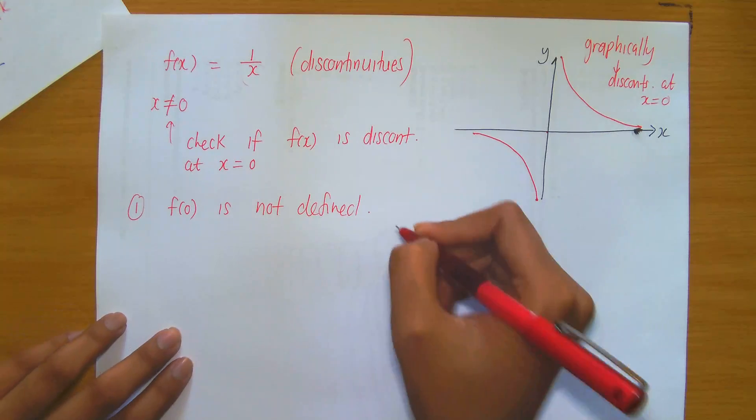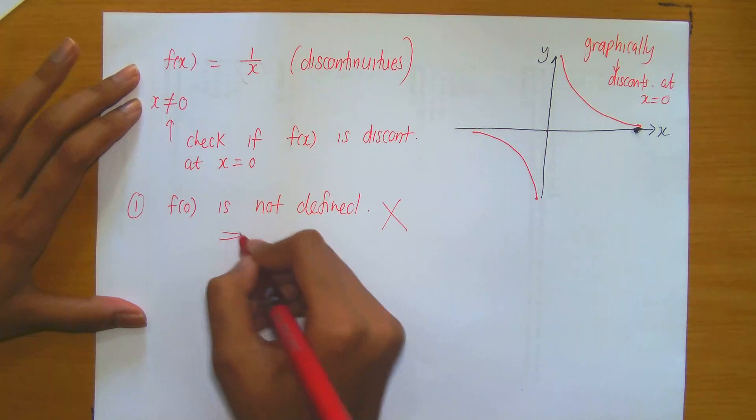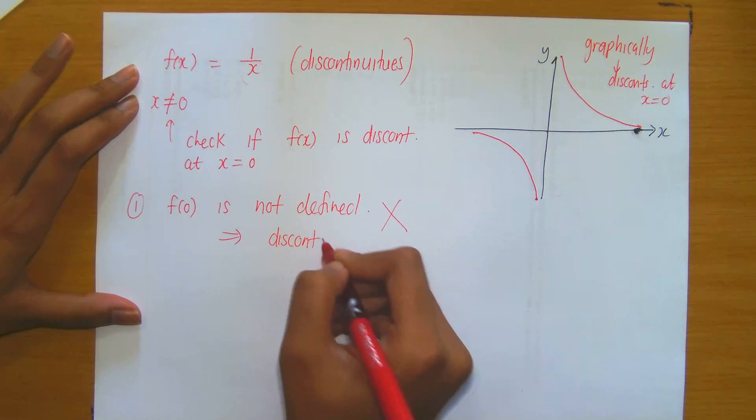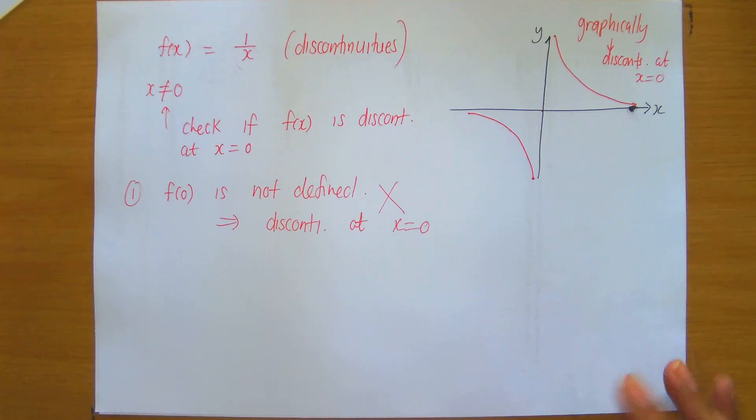Immediately, number 1 is not satisfied, because 1 says that f(a) must be defined. Since this is not satisfied, immediately you can conclude discontinuous at x equals 0 and you can stop.